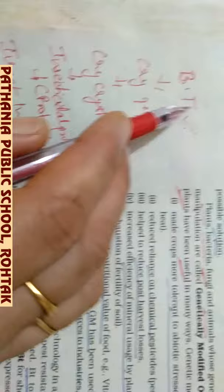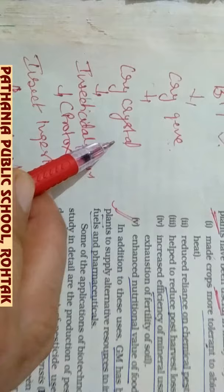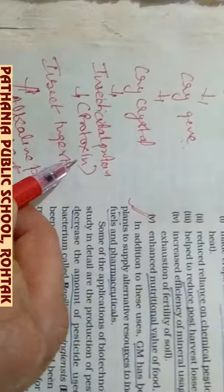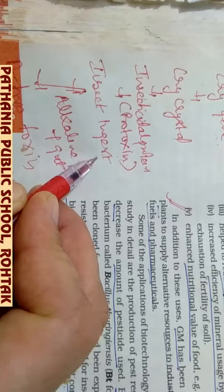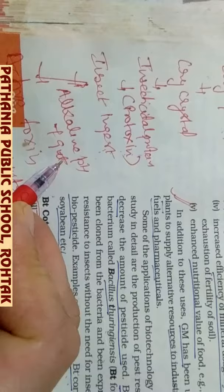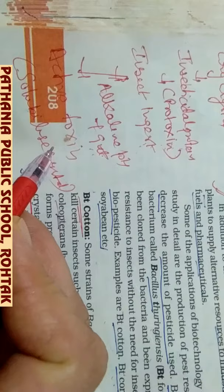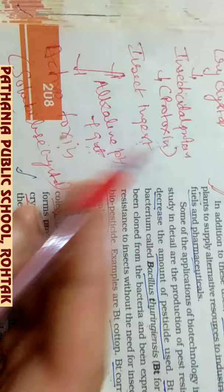Bacillus thuringiensis has a gene called the cry gene. This cry gene actually produces cry crystals, which are nothing but insecticidal proteins. These insecticidal proteins are present in the prototoxin form. But once any insect ingests this insecticidal protein, in the insect body in the presence of alkaline pH in the gut, this prototoxin which was in inactive stage will get activated and become active toxin.